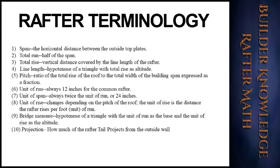The unit of span is always twice the unit of run, or 24 inches. The unit of rise changes depending on the pitch of the roof — it is the distance the rafter rises per foot of run. The bridge measure is the hypotenuse of a triangle with the unit of run as the base and the unit of rise as the altitude. The projection is how much of the rafter tail extends from the outside wall.